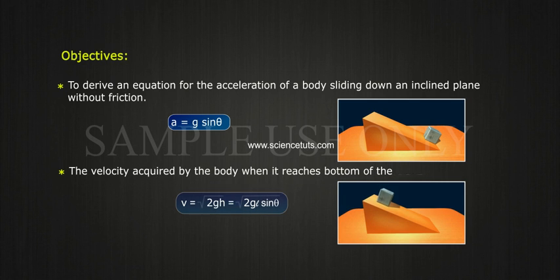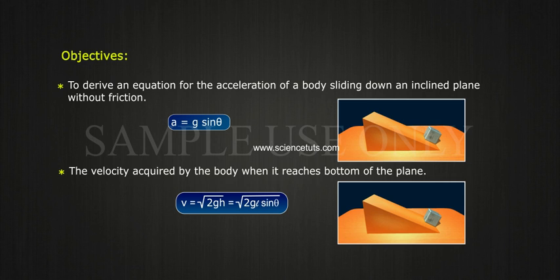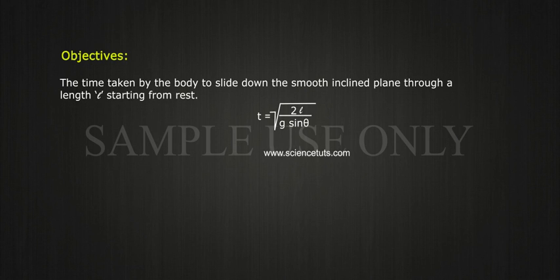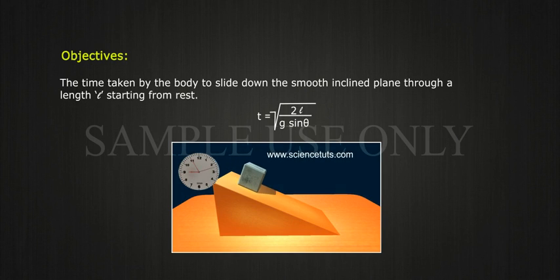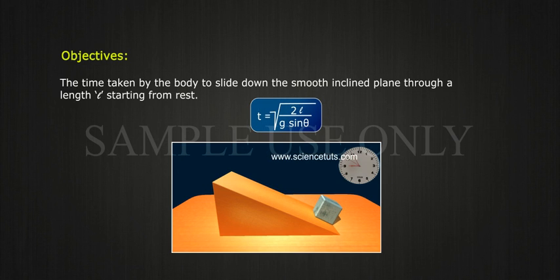The velocity acquired by the body when it reaches the bottom of the plane is V, equal to the square root of 2gh, which equals the square root of 2gl sin theta. The time taken by the body to slide down the smooth inclined plane through a length L starting from rest is T, equal to the square root of 2l divided by g sin theta.